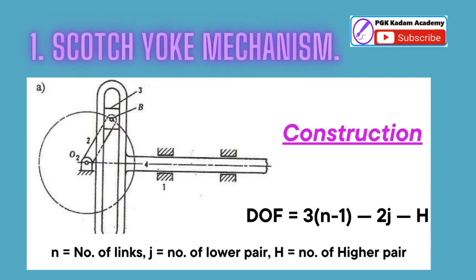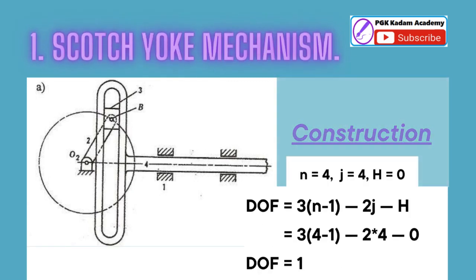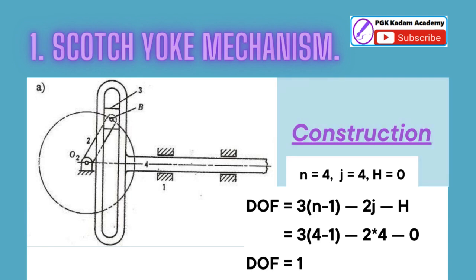The construction of the mechanism is quite simple. It has only one input link, so the degree of freedom (DOF) is 1. We can verify this using the formula: DOF = 3(n−1) − 2j − h, where n, j, h are the number of links, lower pairs, and higher pairs respectively. Here, n = 4, j = 4, h = 0, giving DOF = 1. The sliding yoke moves in simple harmonic motion and its displacement is decided by the length of the crank.